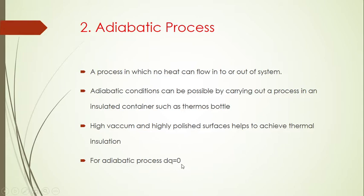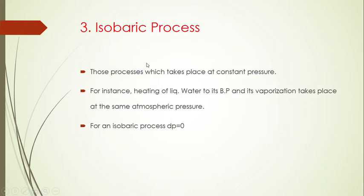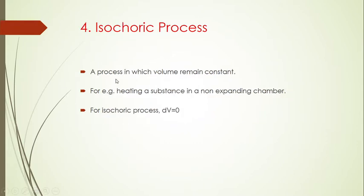An isobaric process takes place at constant pressure. For instance, heating liquid water to its boiling point and vaporization both take place at the same atmospheric pressure — one atmosphere or 760 Torr. So the heating of liquid water is an example of an isobaric process. For an isobaric process, dP equals zero.